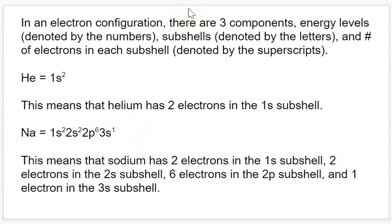This S subshell can also hold one more electron, but sodium only has one electron there. But if we were to draw the element next to sodium — magnesium — that would end in 3S2 instead.